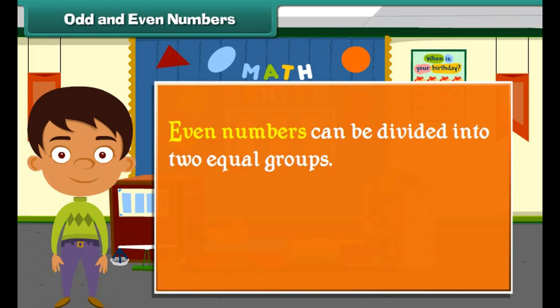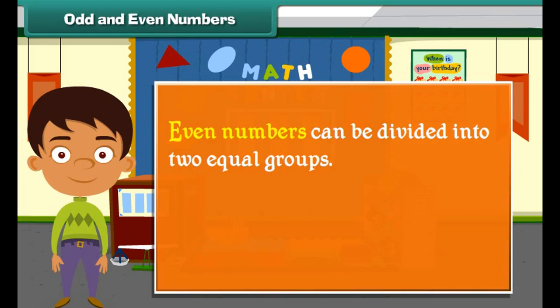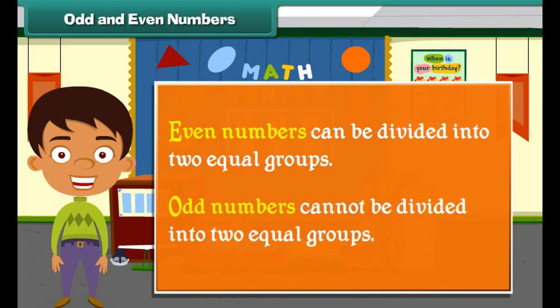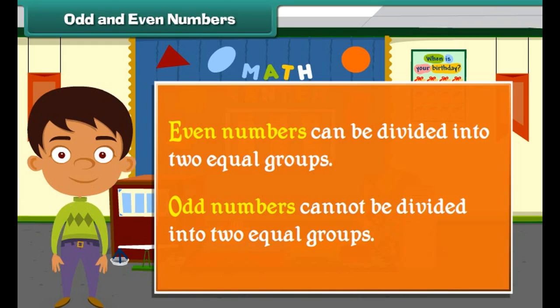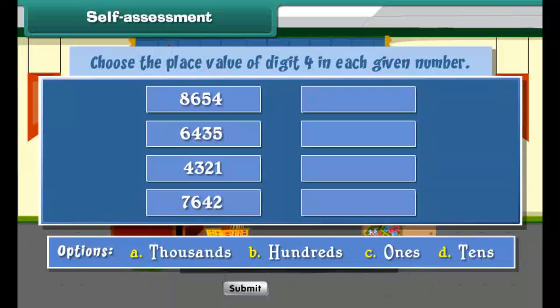Even numbers can be divided into two equal groups. Odd numbers cannot be divided into two equal groups. Self-assessment: choose the value of digit 4 in each given number.